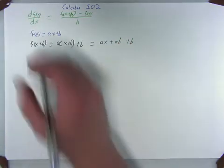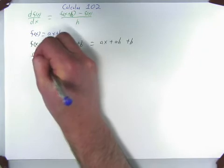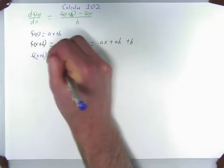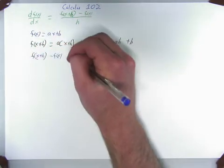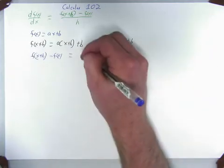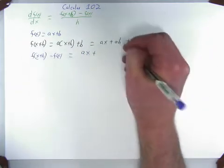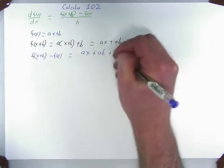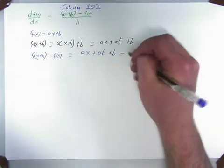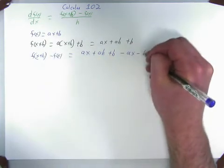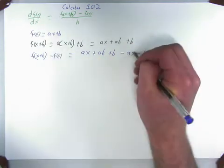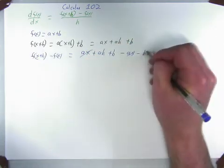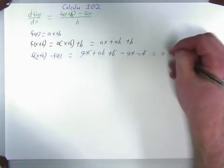So what if we subtract the two? We have f of x plus h minus f of x, which is our top line rule. So that equals to a times x plus a times h plus b minus a x minus b. So ax and ax cancel out. Our b's cancel out. So it equals to a times h.